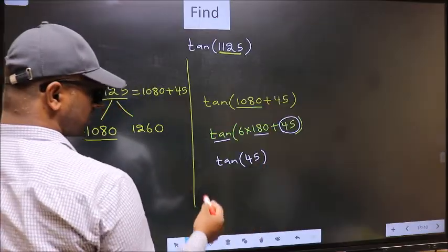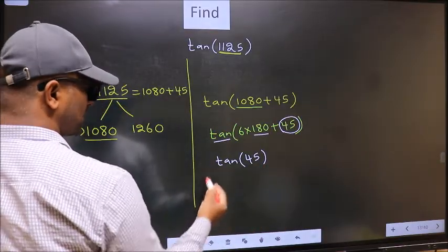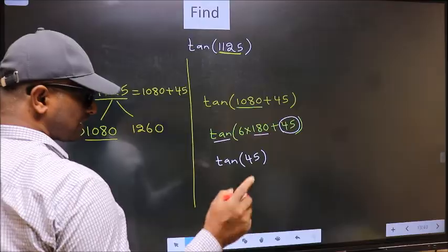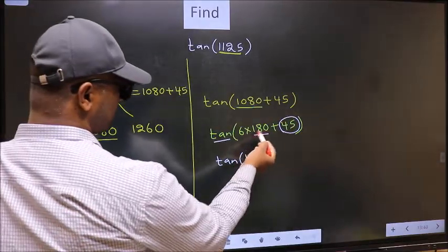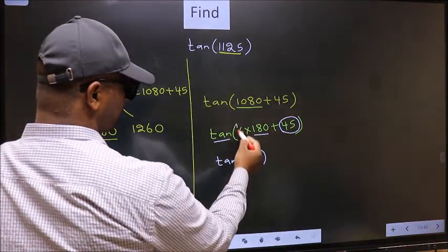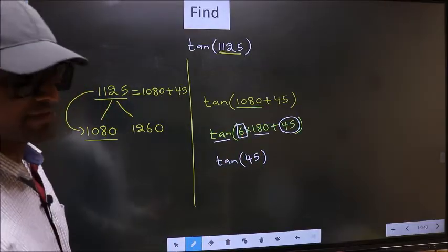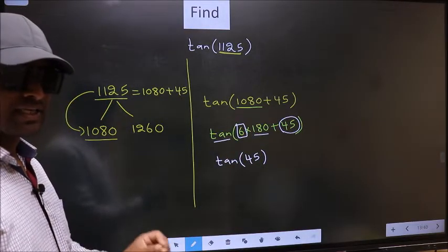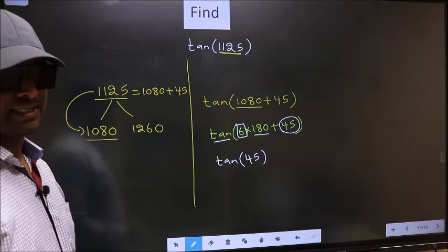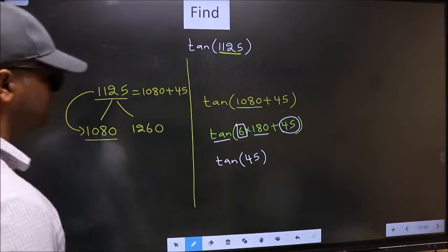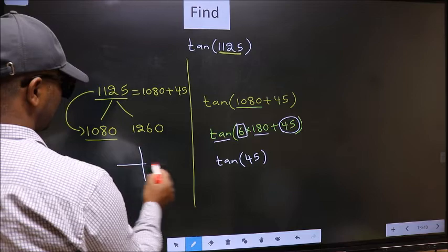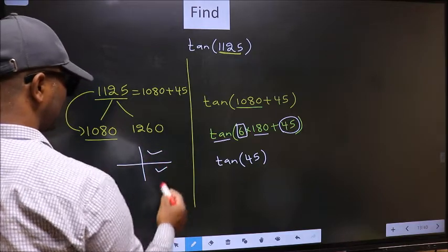Now the question is, will we get here plus or minus? To answer that, we should look at the number before 180. That is 6. And 6 is even. And all the even multiples of 180, they lie either in the first or in the fourth quadrant.